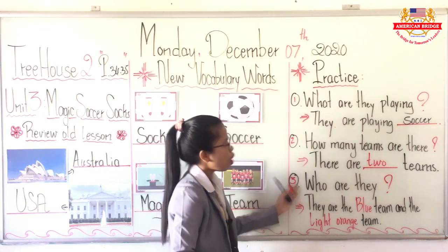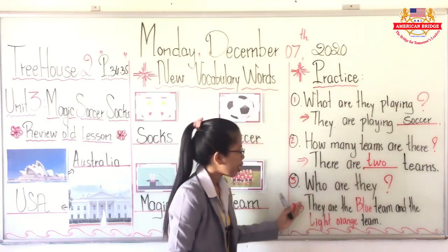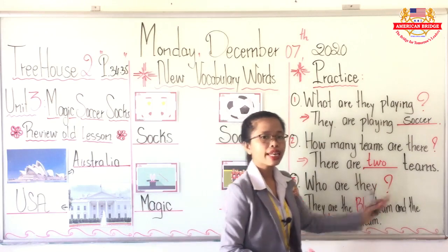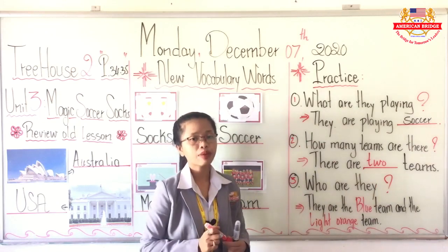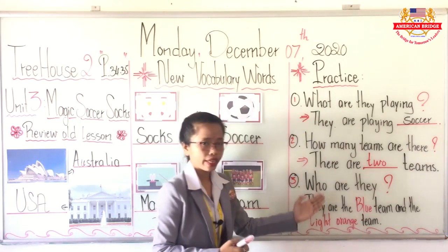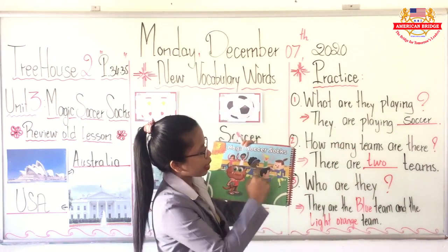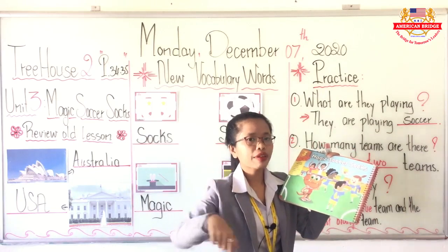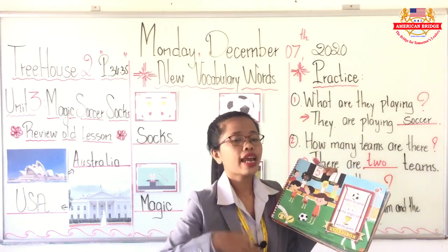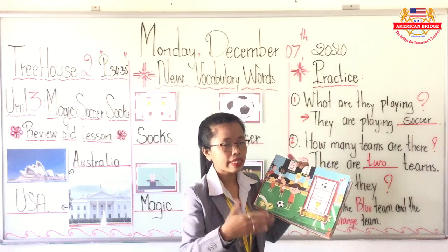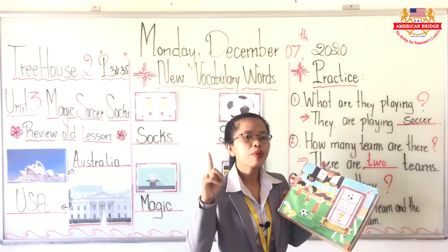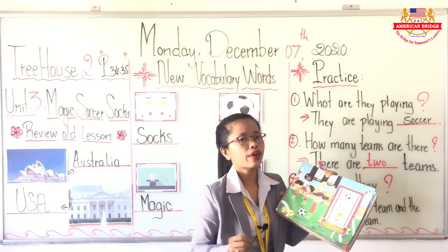And the next question is: who are they? They are the blue team and the light orange team. So we have 2 teams in our story. One is the blue team — they are wearing the blue t-shirt. And another team, they are wearing the light orange t-shirt — we call them the light orange team. So we have 2 teams in our soccer game.